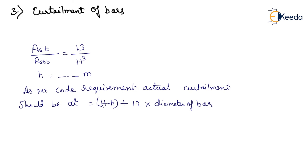Step 3: Curtailment of bars. Capital AST upon AST_B equals small h cubed upon capital H cubed. From here, calculate small h in meters. As per code requirement, actual curtailment should be at (H minus h plus 12 times diameter of bars).